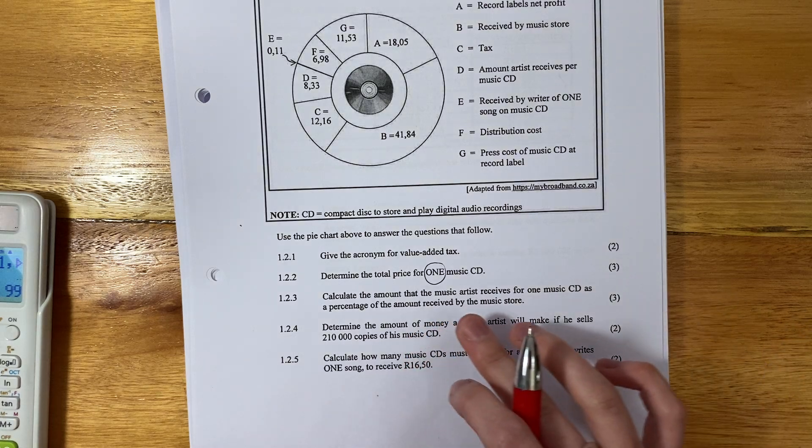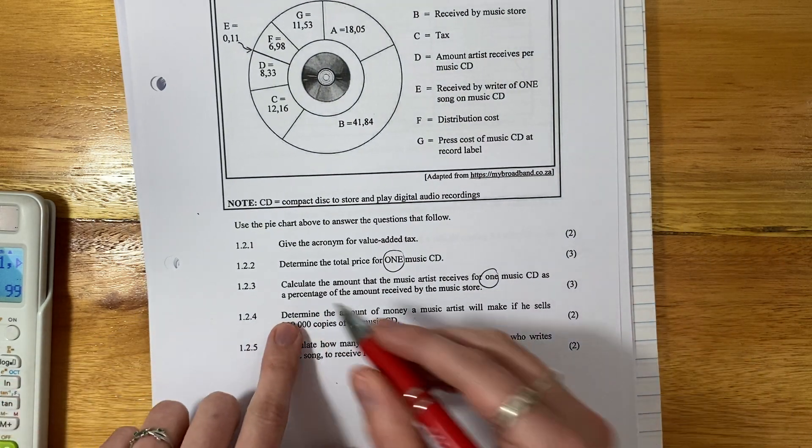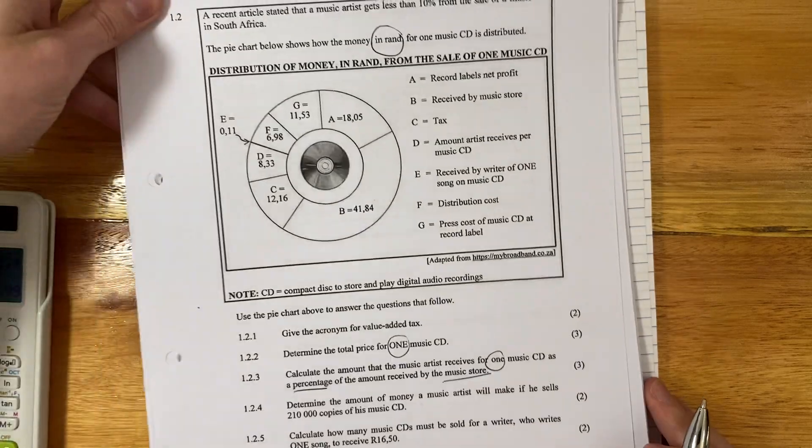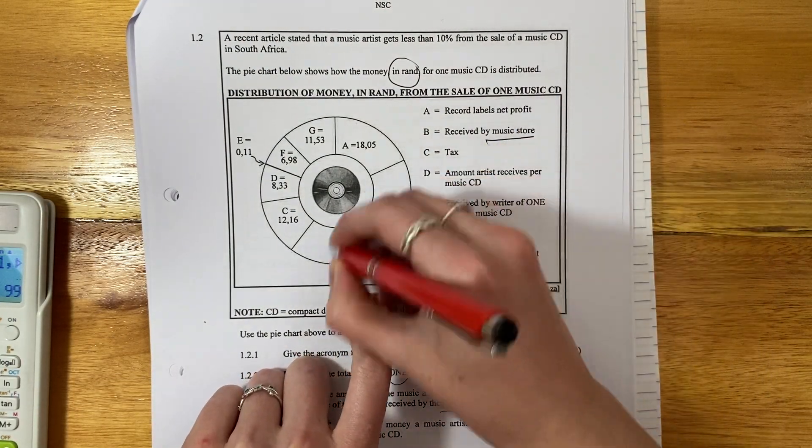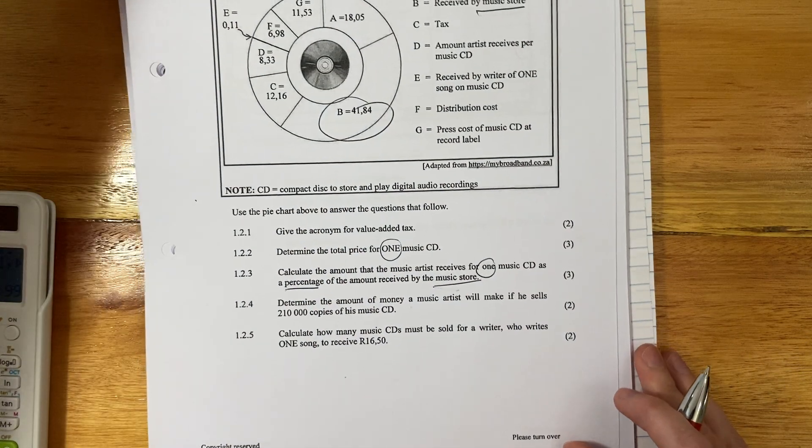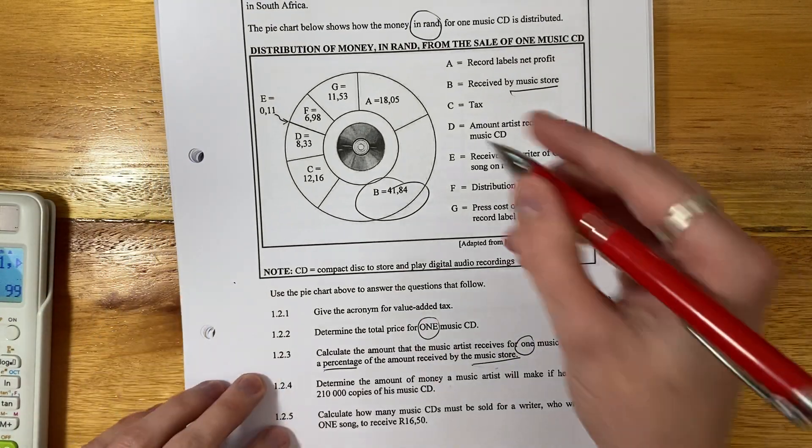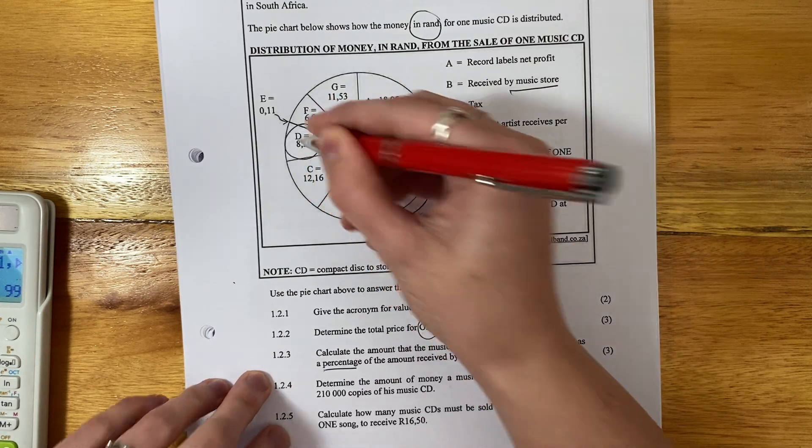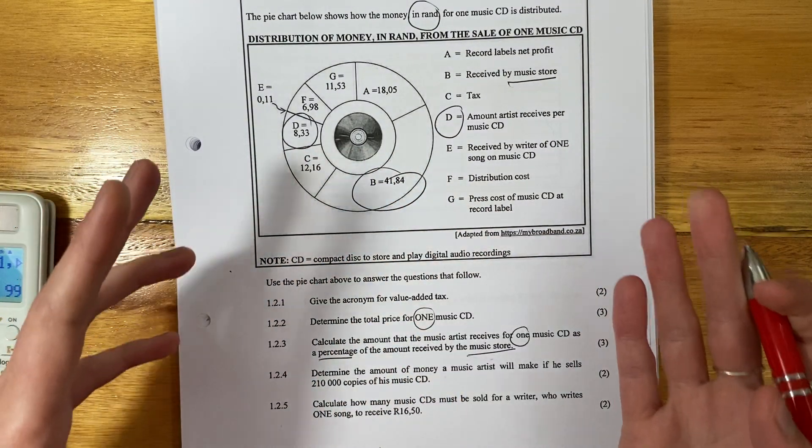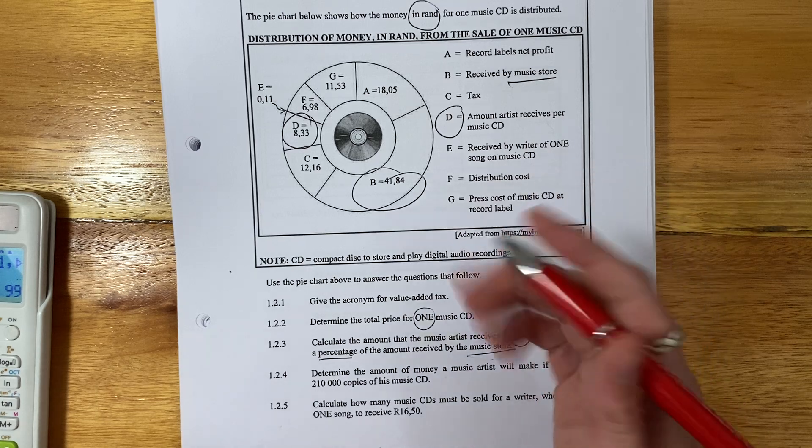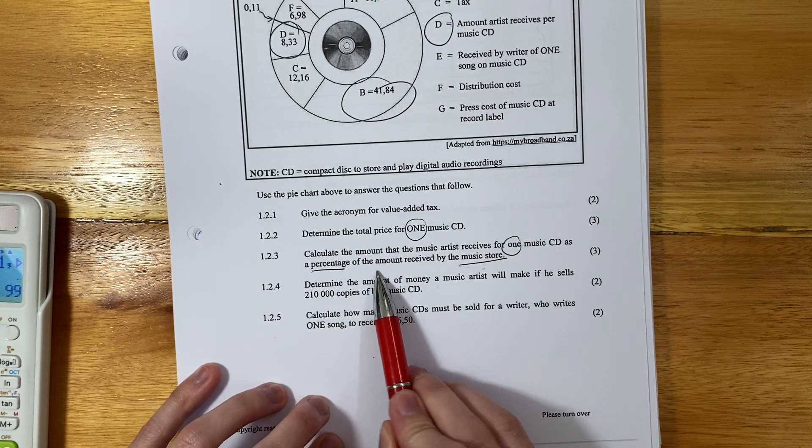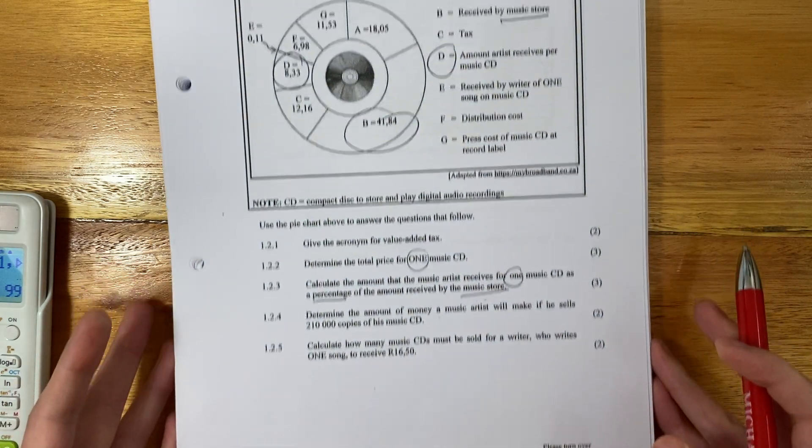Then it says, calculate the amount that the music artist receives for one music CD as a percentage of the amount received by the music store. So let's make sure we're understanding here. The music store is B. So this is the music store. Then it says we're wanting the music artist, what they receive. Let's see, the music artist is D over here, right? So it's going to be 8.33. Now, the common mistake students make here is they put the 8.33 over 99. It didn't say as a proportion of the whole costs. It said as a percentage of the amount received by the music store. So reading, so important. One of the most important things, right, in math lit.